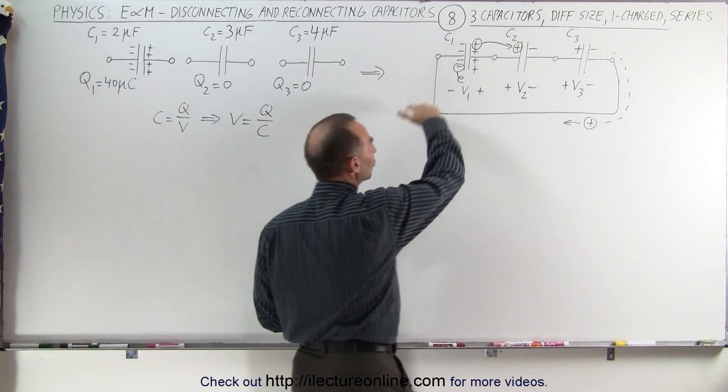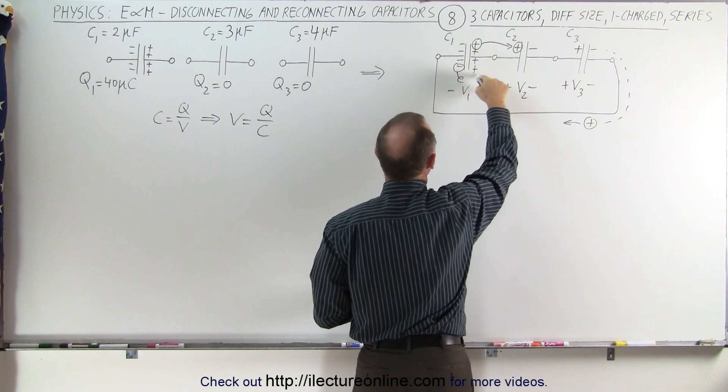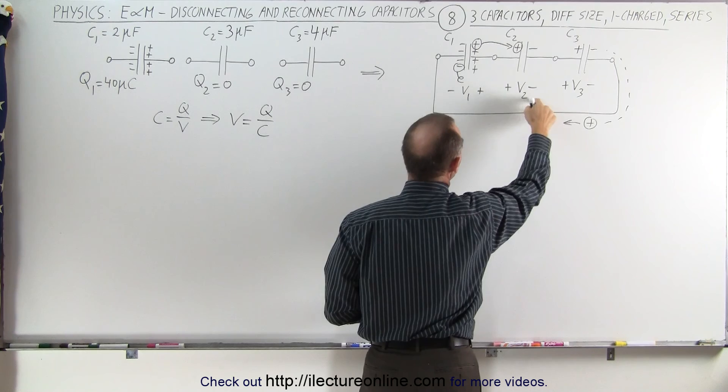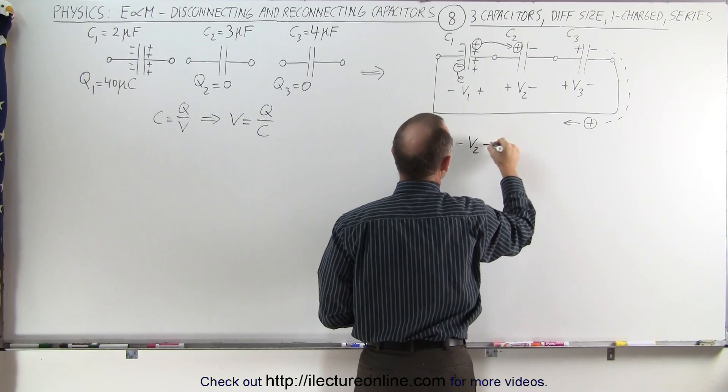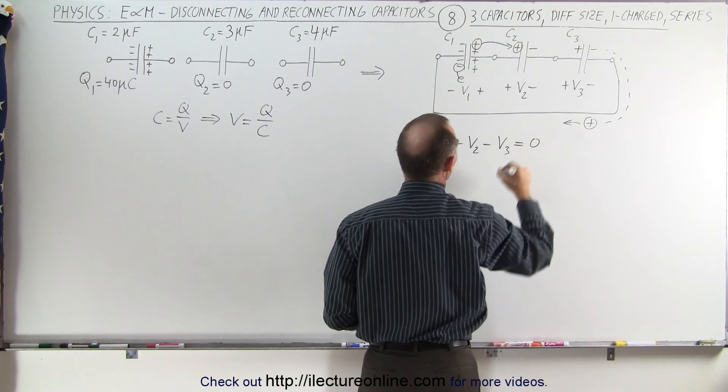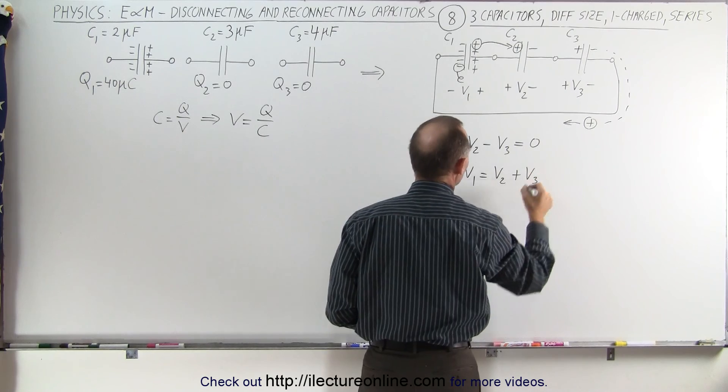We're going to add up the voltages around the circuit and add them up to zero. So we go from negative to positive, that's V1, minus V2, because here we go from positive to negative, minus V3, and we'll come all the way around, that should add up to zero.